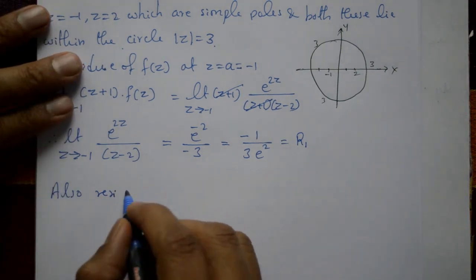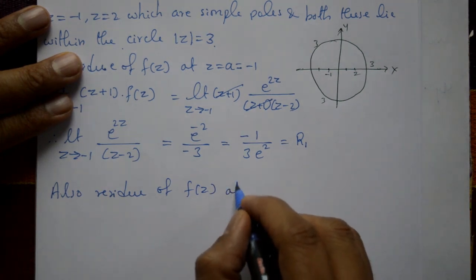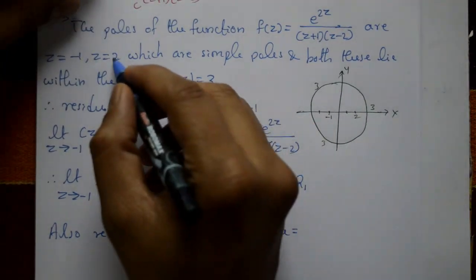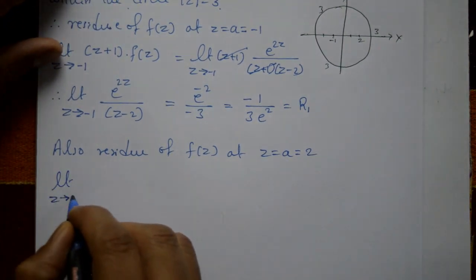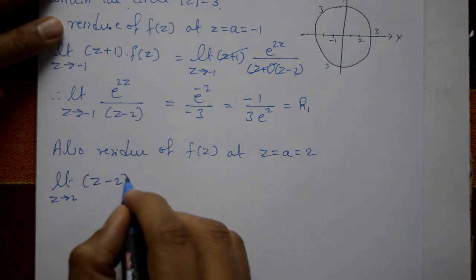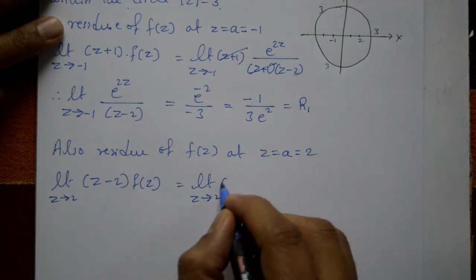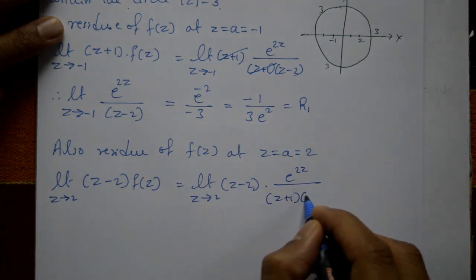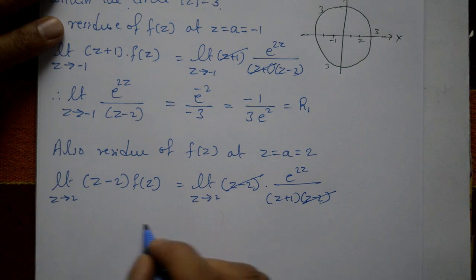The residue of f(z) at z = 2 is the second residue. It is given by the limit as z tends to 2 of (z - 2) · f(z) = (z - 2) · e^(2z) / [(z+1)(z-2)]. The (z - 2) terms cancel, leaving the limit as z tends to 2 of e^(2z) / (z + 1).